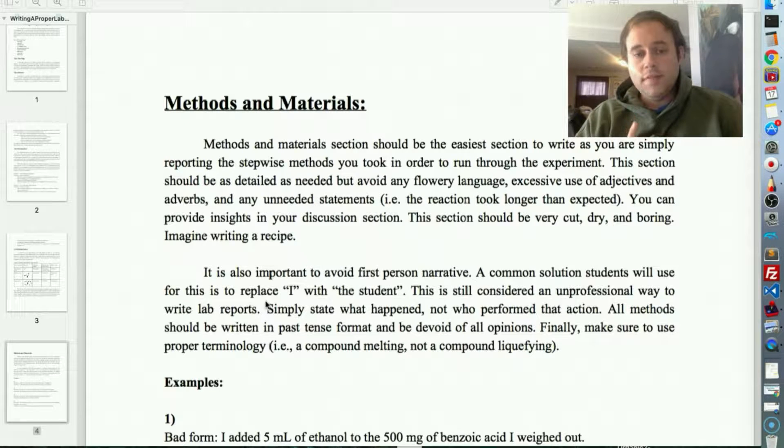A common solution that students will use, now you have to be careful with this. A lot of students will replace I with the student or the experimenter, and this is considered an unprofessional way to attempt to write lab reports. You simply state what happens. You would not say I added five grams of benzoic acid. You would not say the student or the experimenter added five grams of benzoic acid to the flask. You would simply state five grams of benzoic acid were added to the flask. Simply state what happened, not who performed the action.